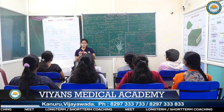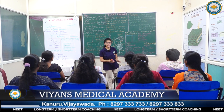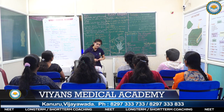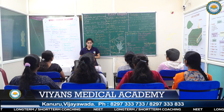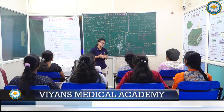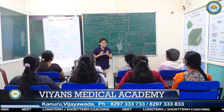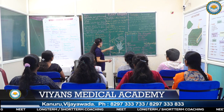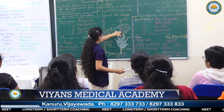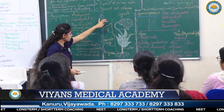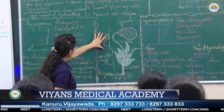In liverworts, there are two types of reproduction: asexual reproduction and sexual reproduction. Asexual reproduction takes place by fragmentation or by the formation of gemmae. Sexual reproduction takes place by sporophytes. After sexual reproduction, meiosis occurs and forms a sporophyte. This sporophyte is majorly divided into three parts: foot, seta, and capsule.